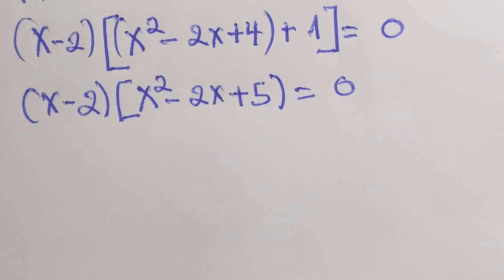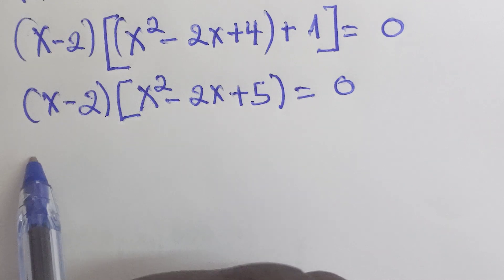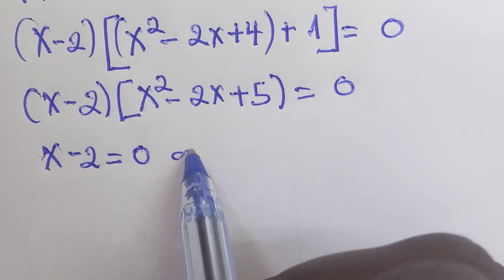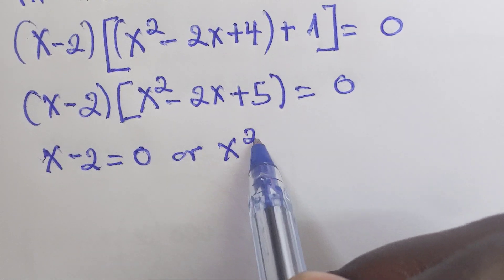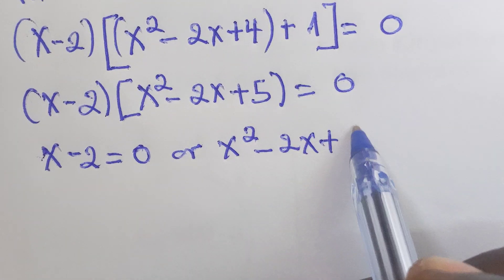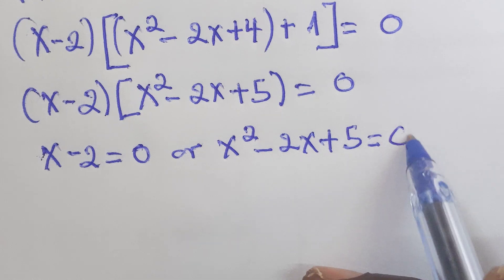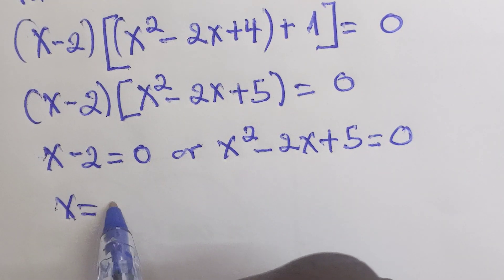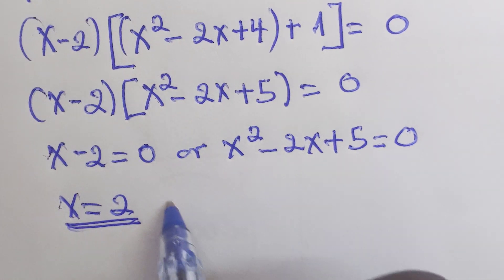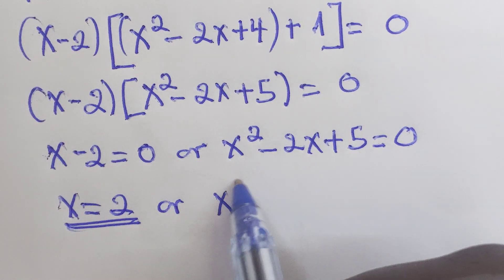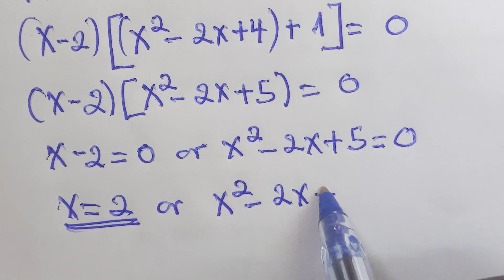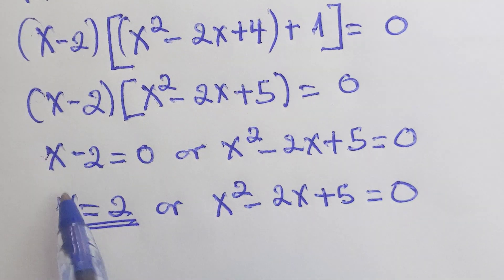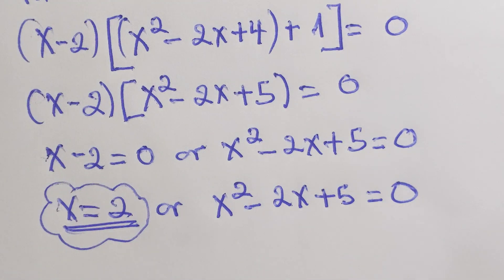Our answer will be x minus 2 equal to 0, or x squared minus 2x plus 5 equal to 0. From the first factor, x equals 2. This is our first value of x.